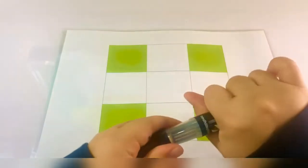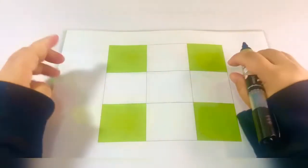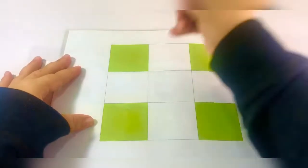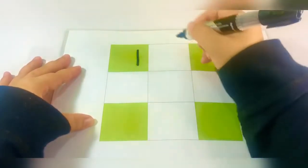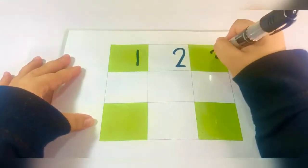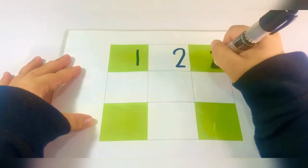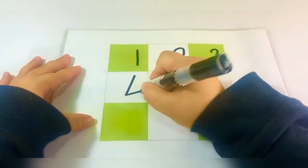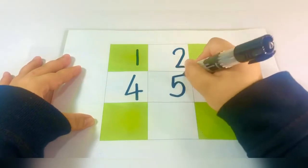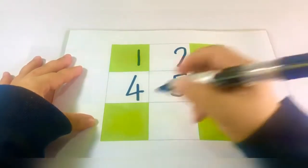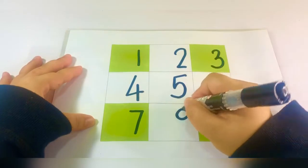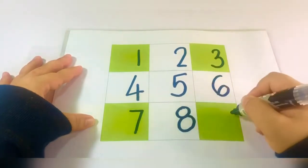Langkah yang kedua pula, perlu menulis nombor 1 hingga nombor 9. Tulislah 1, 2, 3, 4, 5, 6, 7, 8, 9.